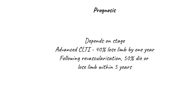The prognosis with chronic limb-threatening ischemia depends on the stage — the more advanced the ischemia and tissue loss, the worse the outcome. For patients with advanced CLTI, about 4 in 10 lose the affected limb within a year. Of those who undergo revascularization, half have either died or lost the limb within five years. The prognosis for CLTI patients is therefore always guarded.